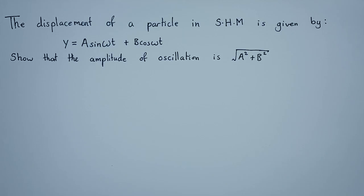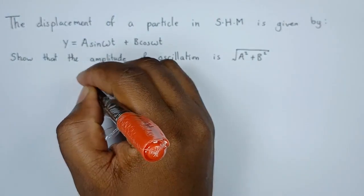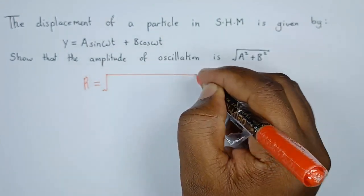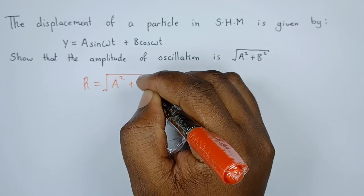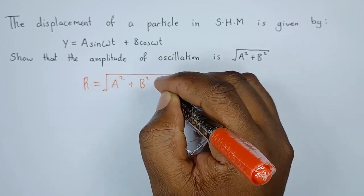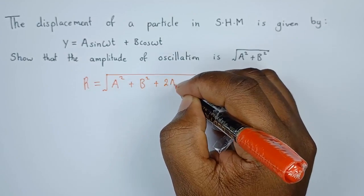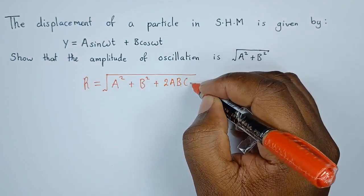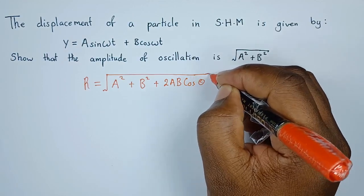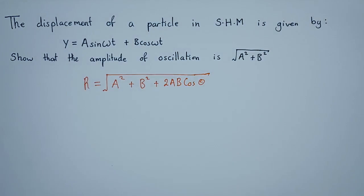The resultant amplitude is given by r = √(a² + b² + 2ab·cos θ), where θ represents the phase difference between the two simple harmonic motions. Now, the phase difference between these two SHMs is 90 degrees, which can be written in radians as π/2.